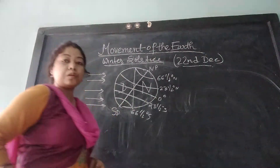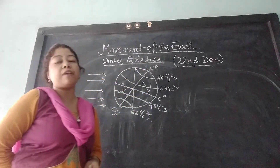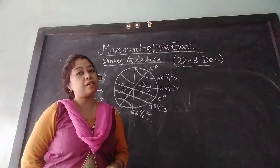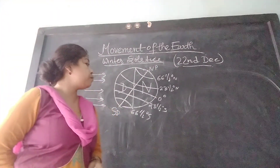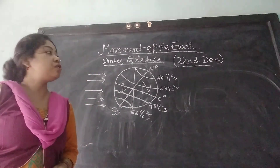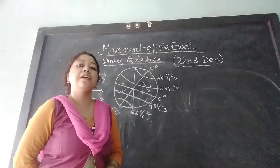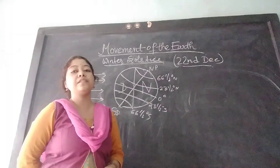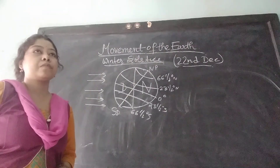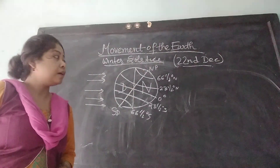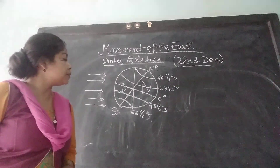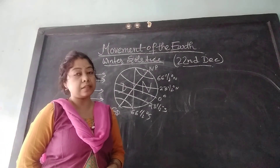The South Pole leans towards the Sun and the North Pole leans away from the Sun. All the places in the Southern Hemisphere receive 12 hours of sunlight, and the places beyond the Antarctic Circle receive 24 hours of sunlight. So in the Southern Hemisphere, days are longer, nights are shorter, and it is summer in the Southern Hemisphere.